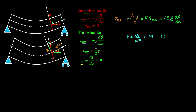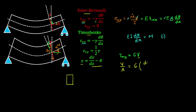For the Timoshenko beam we need an additional relation: the constitutive relation between shear stress and shear strain, which is related by the shear modulus. If we first assume that the shear stress is uniform on the cross section, we can write this as the shear force divided by the cross-sectional area. Then substituting for the shear strain, we have the following expression.